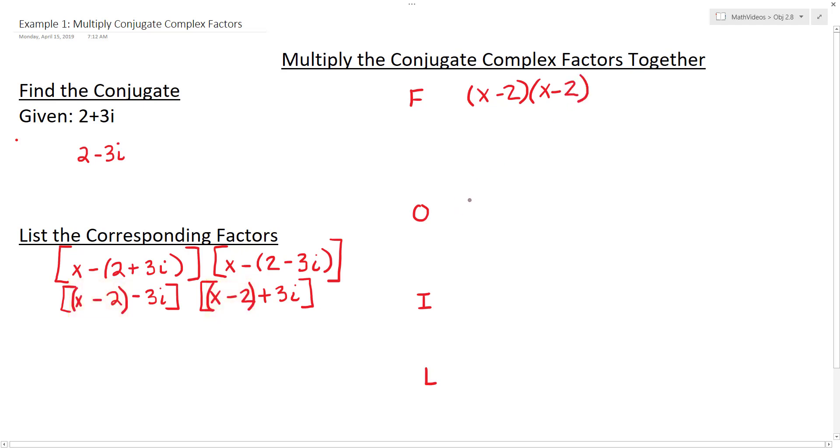For the outside, it'll be positive 3i times x minus 2. For the inside, it's going to be negative 3i times x minus 2. And then for last, it's going to be negative 3i times positive 3i.